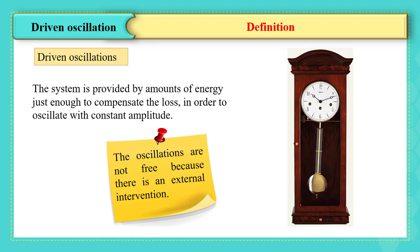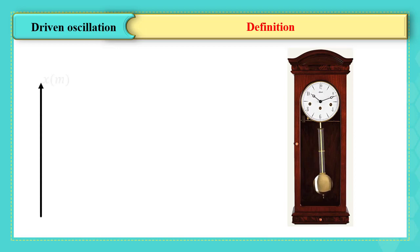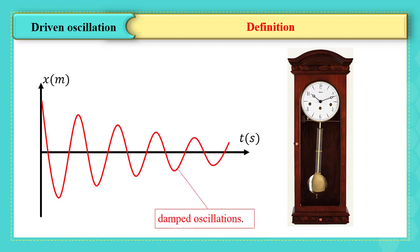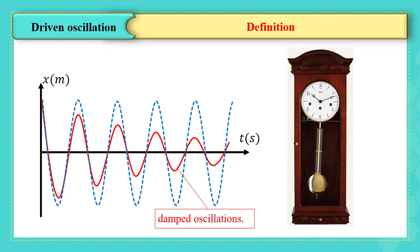The clock pendulum without the electric battery performs free damped oscillations because the resistance of the air and the friction with its axis of rotation. For this reason, the engine battery system is used to maintain the oscillations to compensate for the loss of energy dissipated. The system then is called exciter. Driven oscillations are periodic and they have a period equal to the proper period of the pendulum.